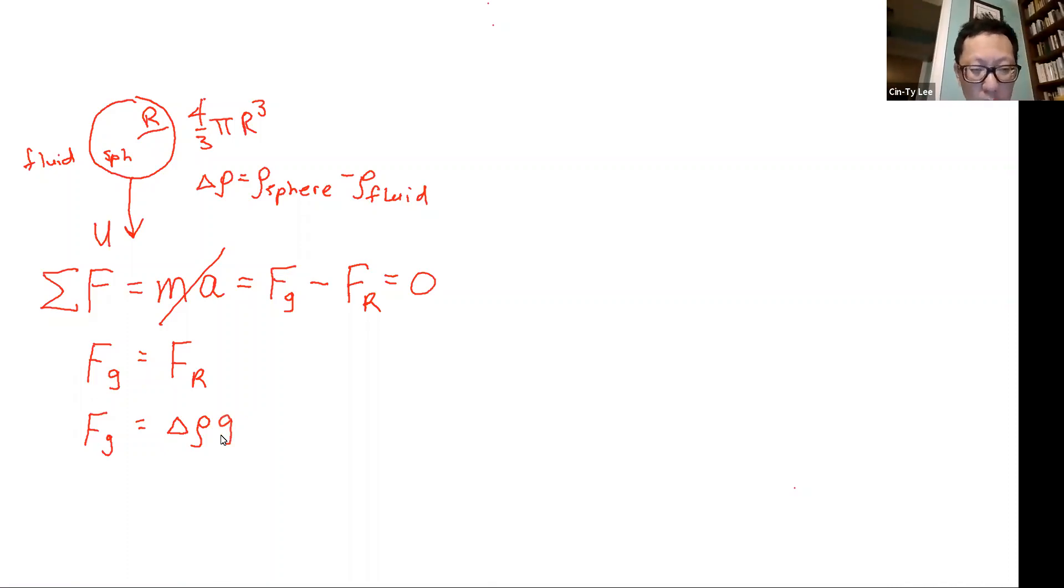That has units rho times g. Rho is kilograms per meter cubed. G is meters per second squared. And if you multiply the density by the volume, let's say four-thirds pi r cubed, density times the volume, they cancel, is mass. And then this quantity, fg, has units of mass times gravity. And that's a force.